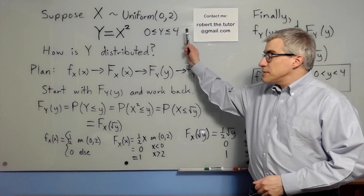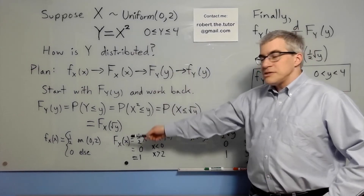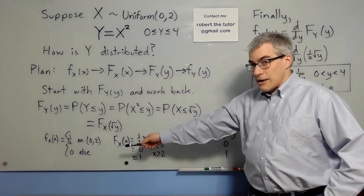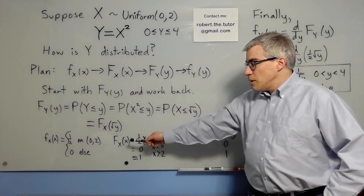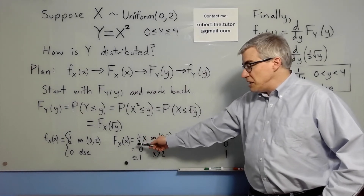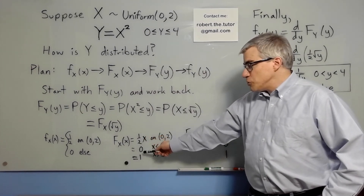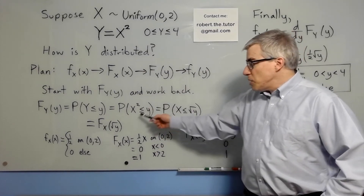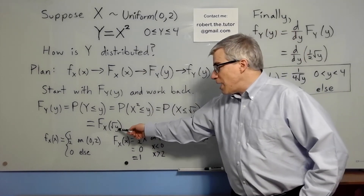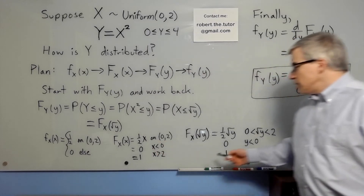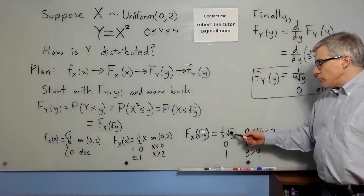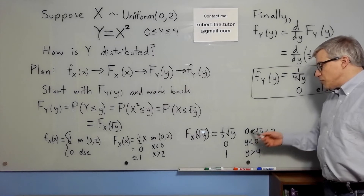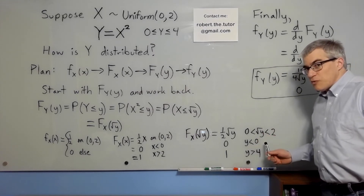Since x is uniform, we know its density function is a constant — in this case, one-half. If we integrate that, we get the CDF, which would be one-half x on the same interval. Now, plugging the square root of y into that, we get one-half square root of y for square root of y between zero and two, which means y is between zero and four.